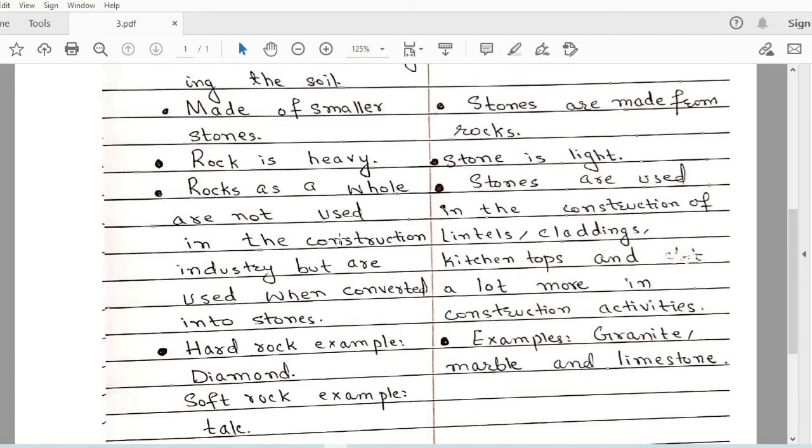Rocks as a whole are not used in the construction industry but are used when converted into stones. Rocks are large because of which they as a whole material cannot be used directly in construction. But it is converted into stone so that it could be used in construction for various purposes. Stones are used in the construction of lintels, claddings, kitchen tops and a lot more in construction activities.